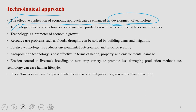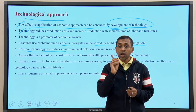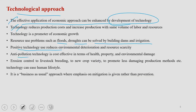Different kinds of resource uses are often affected by floods and droughts, and these kinds of natural events can be addressed through the utilization of technology like dams and irrigation channels. Positive technology intervention will definitely reduce environmental deterioration and can manage resources in a better manner so there is no sudden resource crunch in the vicinity. The role of technology is also important to reduce pollution. Anti-pollution technology is cost-effective in terms of health, property, and environmental damage. If your technology is environmentally clean, then health will not be negatively affected, reducing associated medical expenditure.